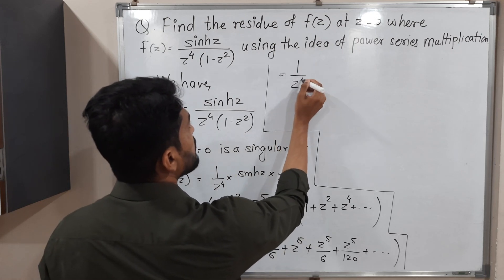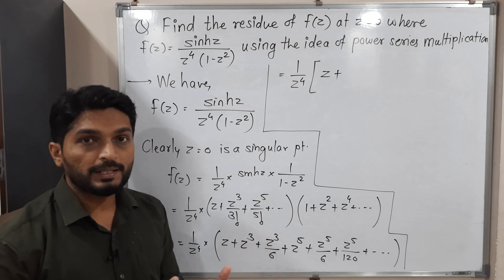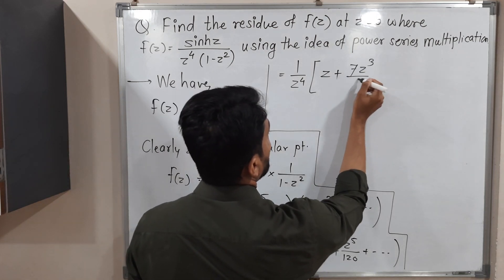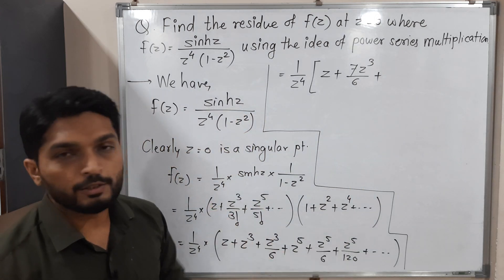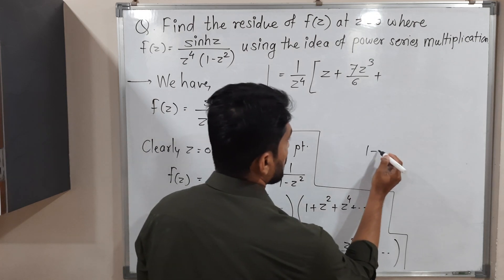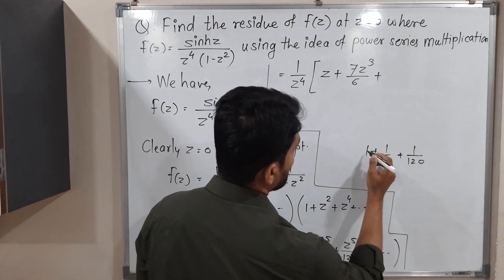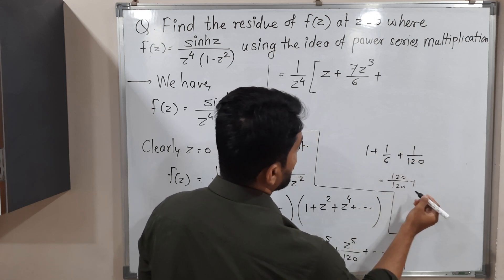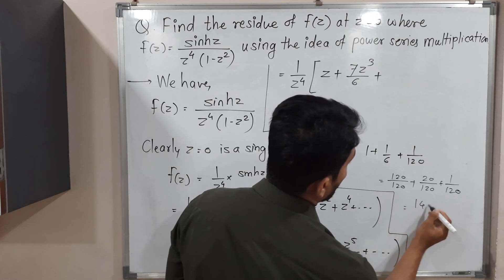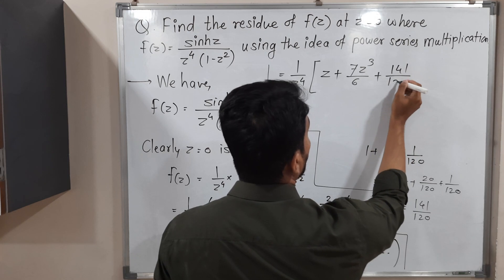This equals 1 over z⁴ times: z, plus the two z³ terms combined — 6z³ over 6 plus z³ over 6 gives 7z³ over 6 — plus the three z⁵ terms. For the z⁵ coefficient we add 1 plus 1/6 plus 1/20, using denominator 120: that is 120/120 plus 20/120 plus 6/120 = 141/120. So the z⁵ term is 141z⁵ over 120.